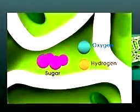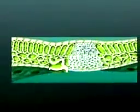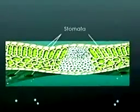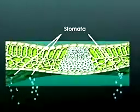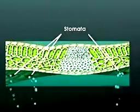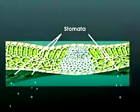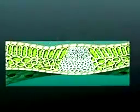The excess oxygen enters the air through the stomata or pores of the leaf. People, animals and all other living organisms need oxygen in order to live.